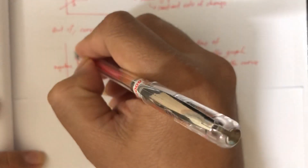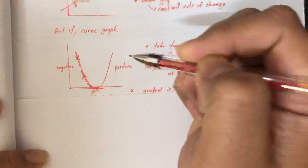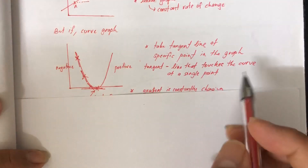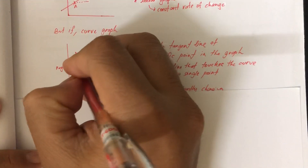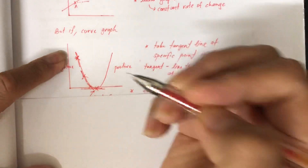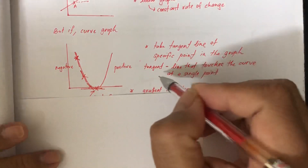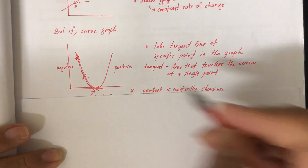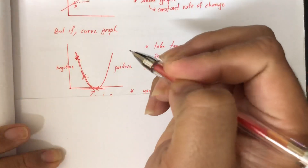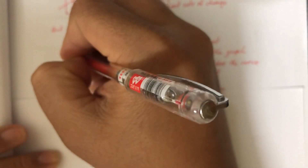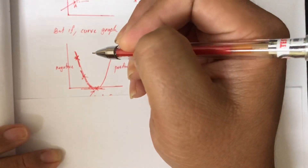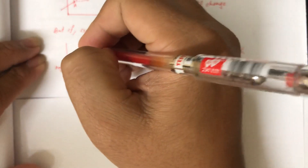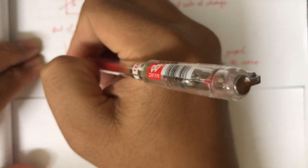So let's say we have a line here — this we call a tangent. Meaning we take the tangent line at a specific point in the graph, and we find what is the slope or gradient at that point. A tangent is a line that touches the curve at a single point. As we can see here, the straight line shows that the value of the slope or gradient is negative.